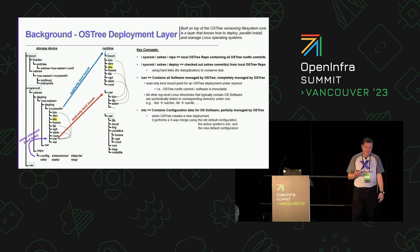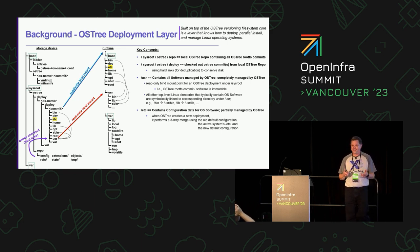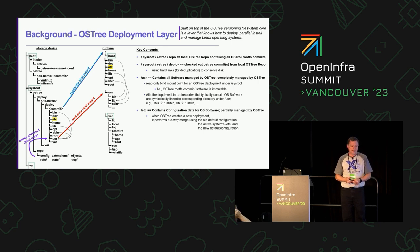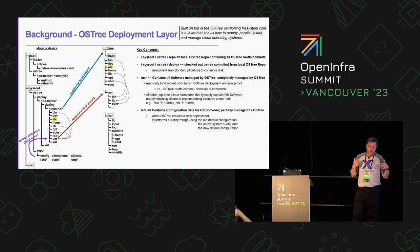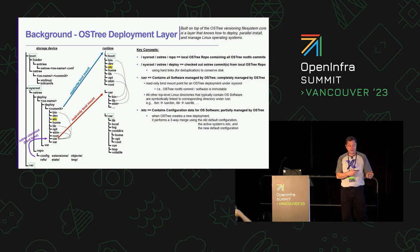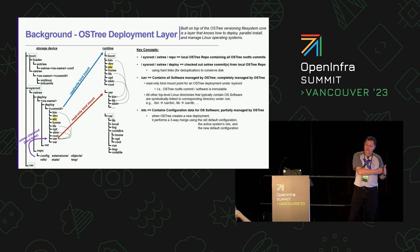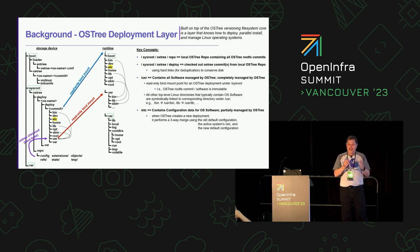/etc is partially managed by OSTree. It contains configuration of the services in the OS whose software is managed in /usr — configuration data that the user sets for a particular deployment. OSTree can only partially manage it because it must preserve user configuration. So when doing a deployment from one rootFS commit to another, OSTree performs a three-way merge of the old default ETC config from the rootFS being migrated from, the active system's ETC with the user's configuration, and the new default configuration of the rootFS being upgraded to.